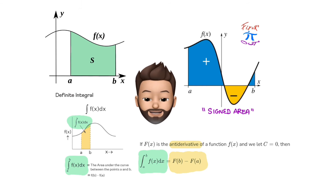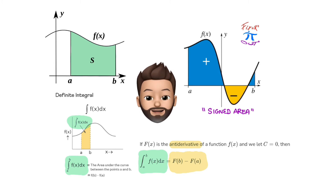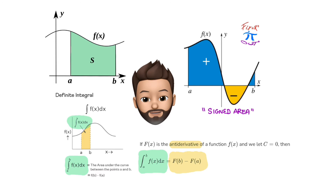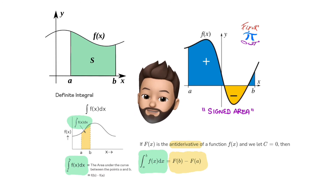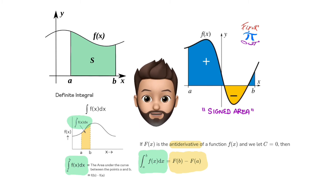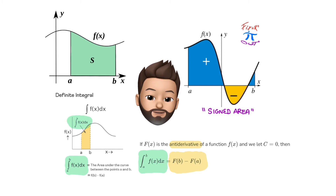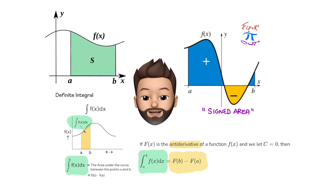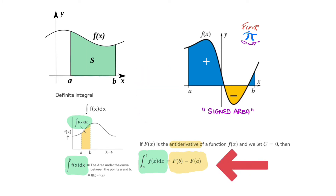The definite integral is the area underneath the curve between the points a and b on the x-axis. If that area is above the x-axis, it's positive; if it's below the x-axis, it's negative. Therefore we call it the signed area. Now, if capital F of x is the anti-derivative of our function, we can use that with the first fundamental theorem of calculus to evaluate the integral. In practice, integrals are evaluated by their anti-derivatives at their endpoints, at a and b — the limits of integration.